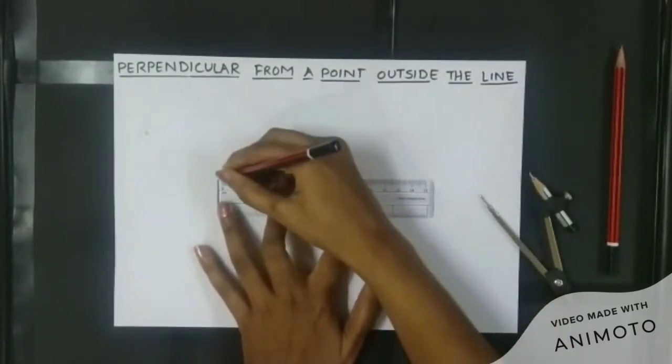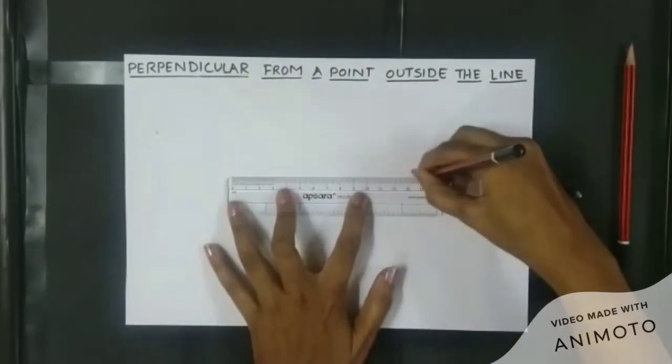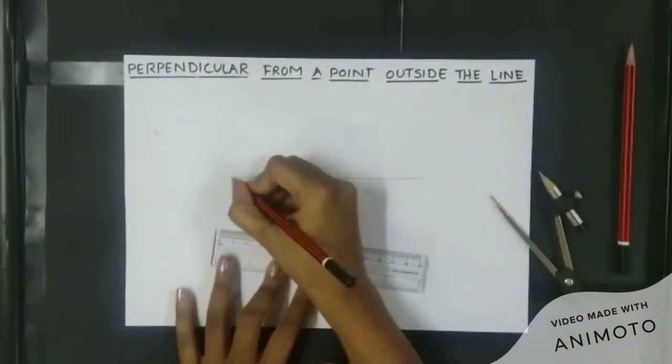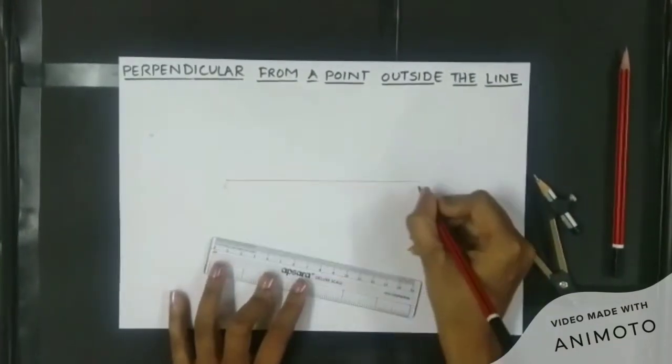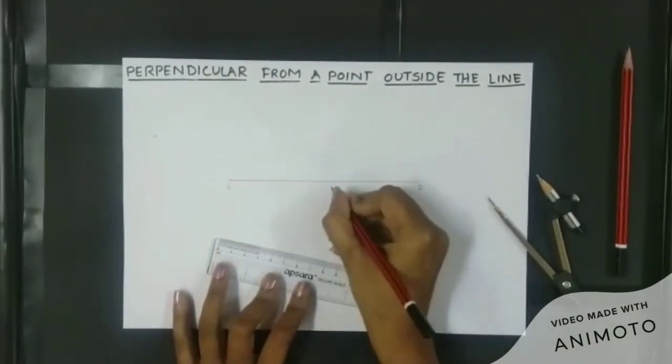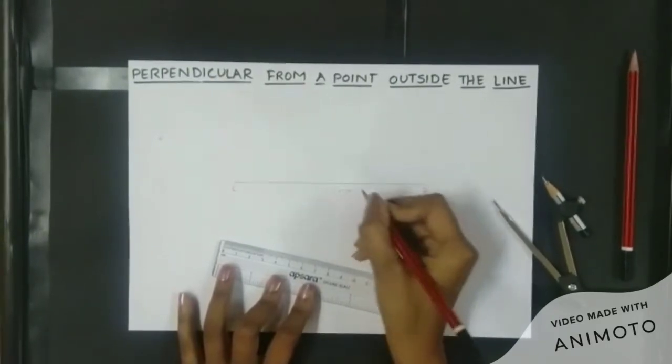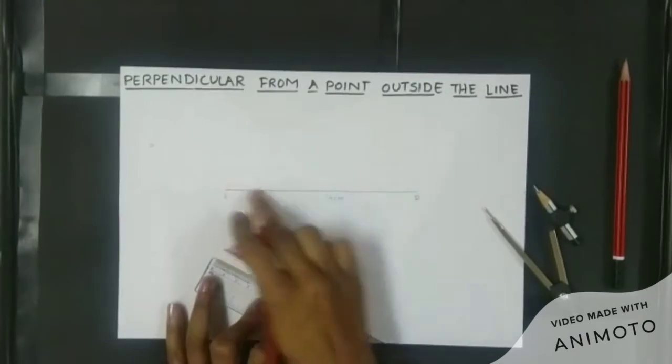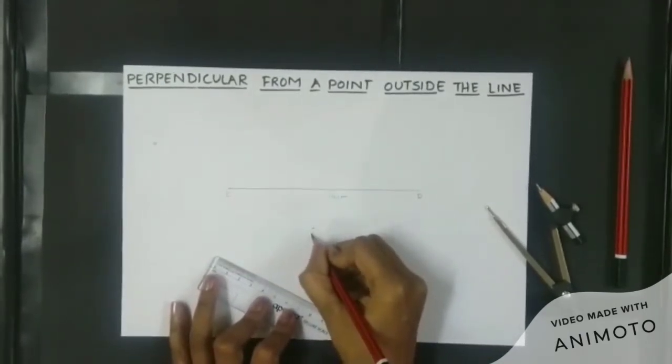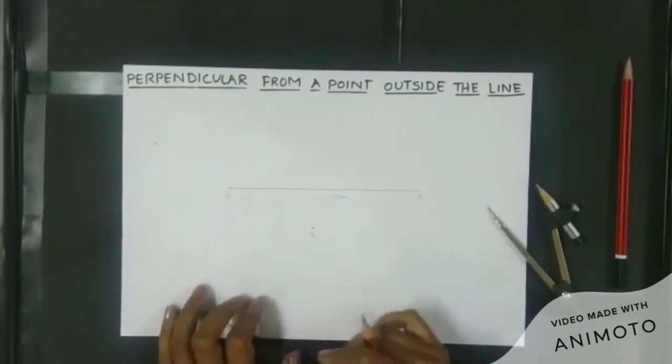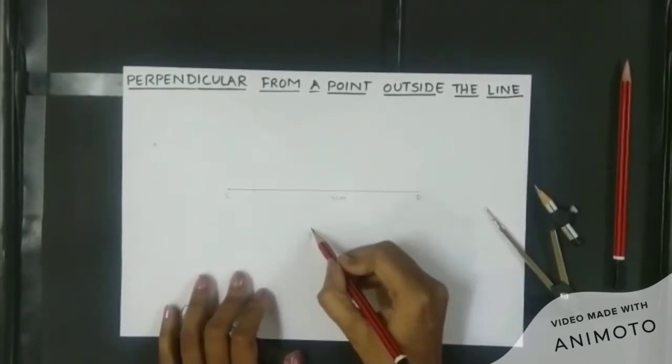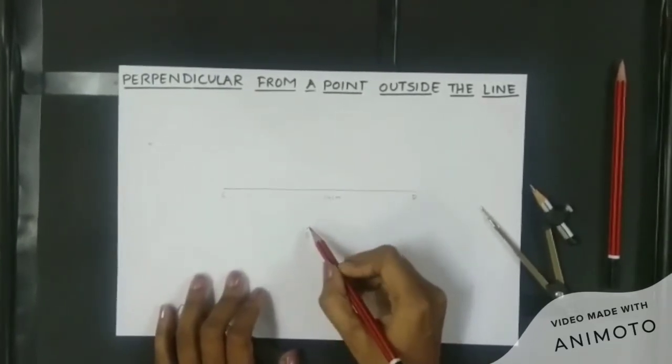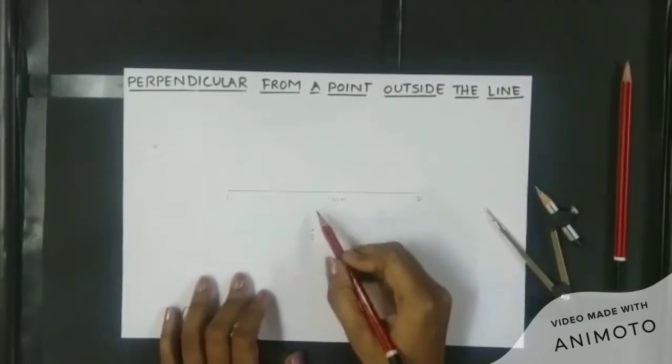So this is my line segment CD, 14 centimeters, and there is a point which is away from this line segment CD. Let's label this point as S and we have to draw a perpendicular from this point S on the line segment CD.